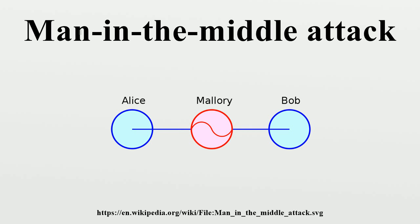Alice sends a message to Bob, which is intercepted by Mallory. Alice says: "Hi Bob, it's Alice. Give me your key." Mallory relays this message to Bob, and Bob cannot tell it is not really from Alice. Bob responds with his encryption key.